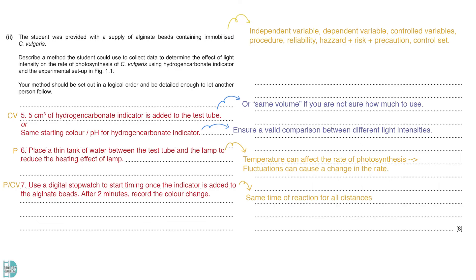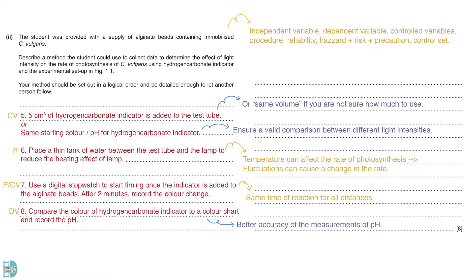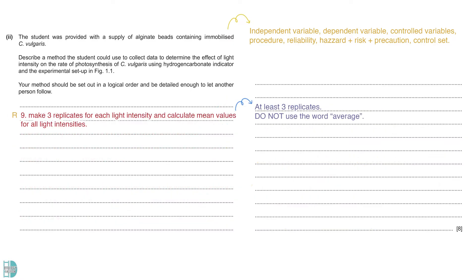We should allow the same time of reaction for all distances. Use a digital stopwatch to start timing once the indicator is added to the alginate beads. After 2 minutes, record the colour change. To improve the accuracy of the measurements, we can compare the colour of the hydrogen carbonate indicator to a colour chart and record the pH. To increase the reliability of the data, we should make 3 replicates for each light intensity. Then calculate a mean value for each of them.